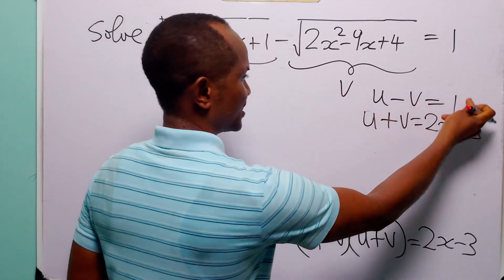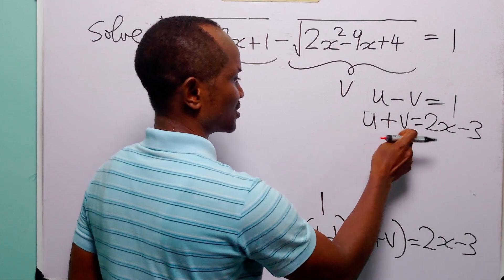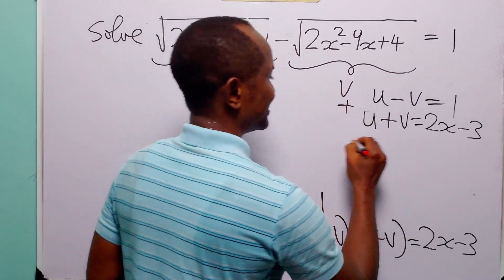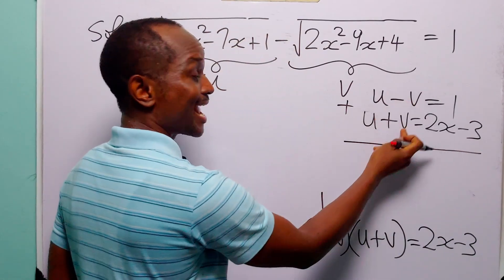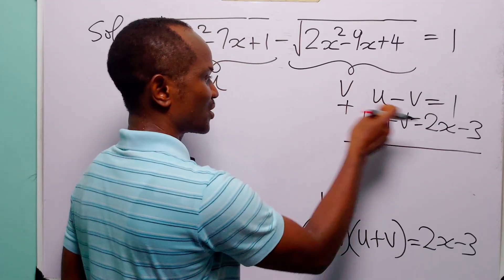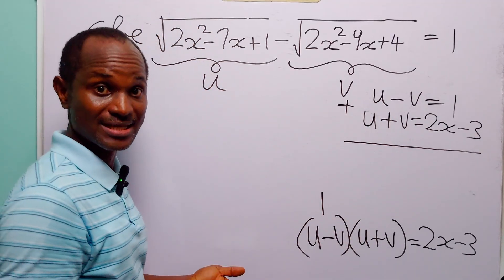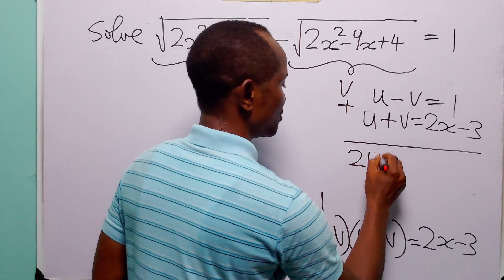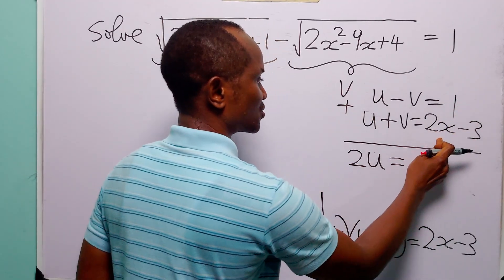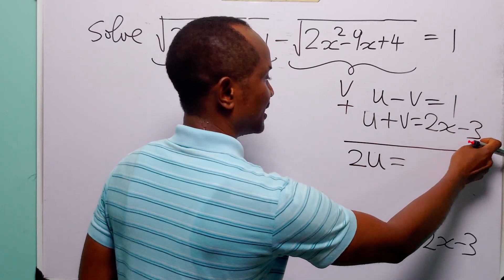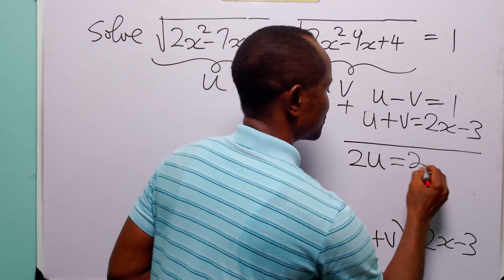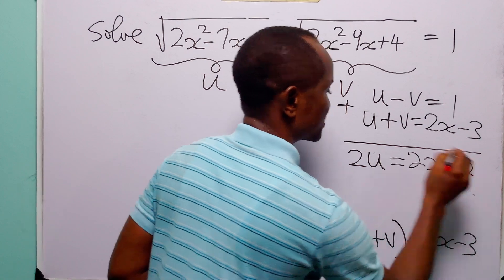Now here we have u minus v is equal to 1, and u plus v is equal to 2x minus 3. Notice that if we add these two equations, we will be able to eliminate v, because minus v plus v is equal to 0. So when we do that, we have that u plus u is 2u, equal to 1 plus 2x minus 3, that is 2x plus 1 minus 3.